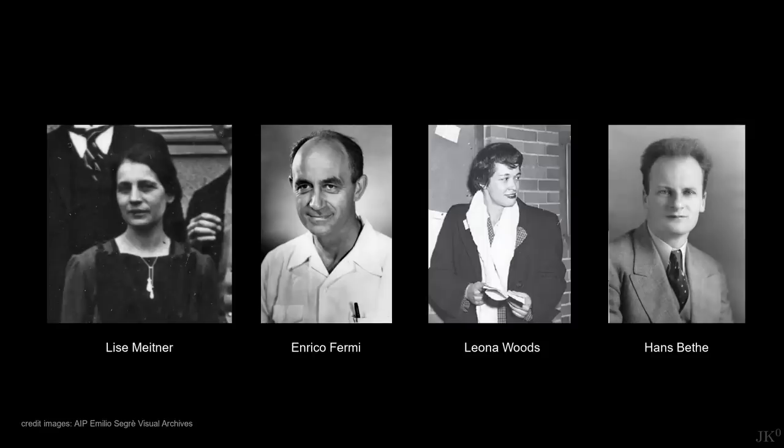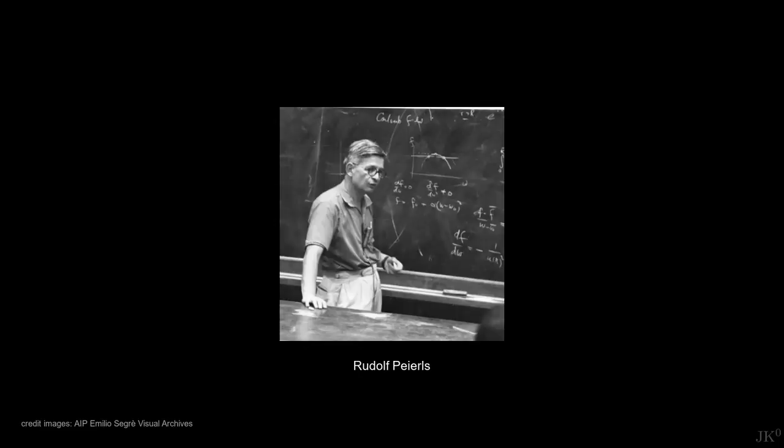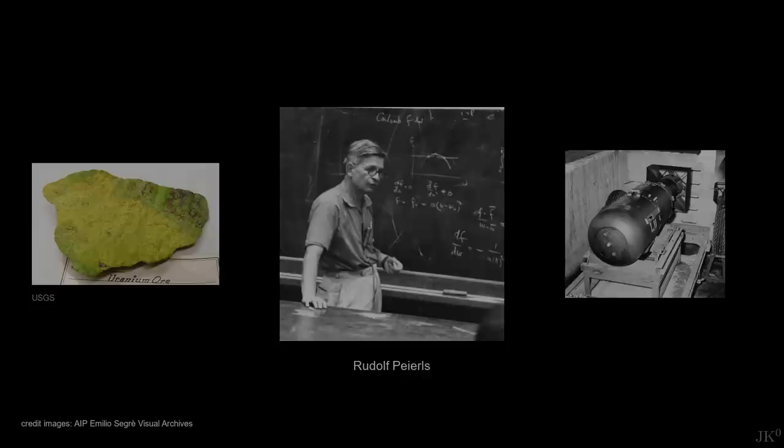Lise Meitner, Enrico Fermi, Leona Woods, Hans Bethe. The story of the nuclear critical mass has a key unsung hero, Rudolf Peierls. Many authors even call him the true father of the atomic bomb, because his calculations really turn a piece of uranium metal, described by abstract equations, into a realistic explosive material.